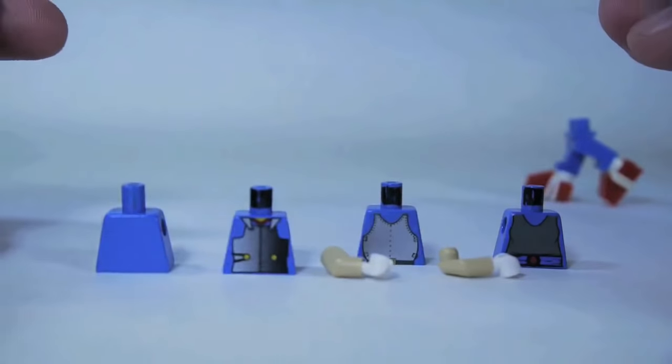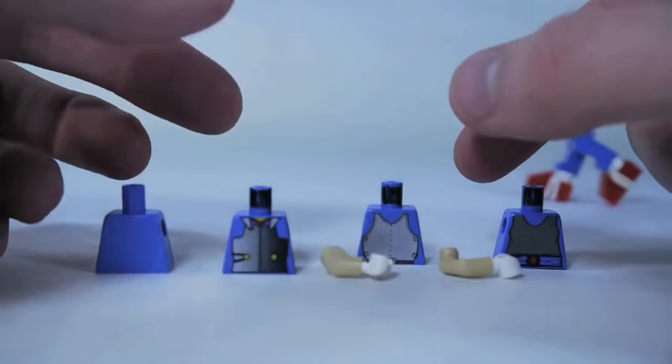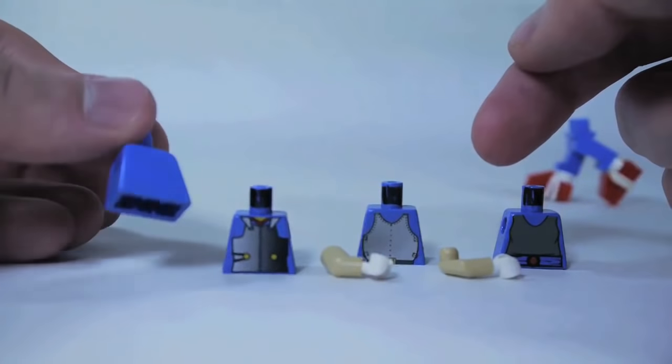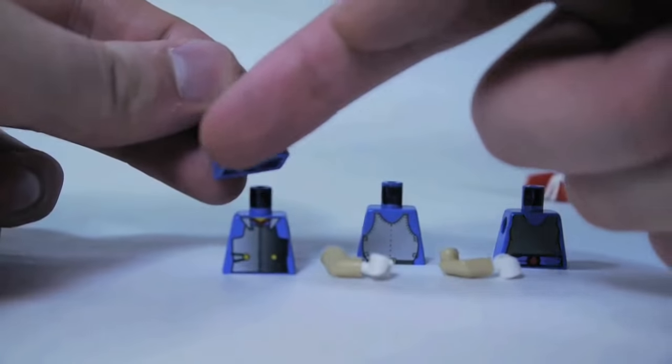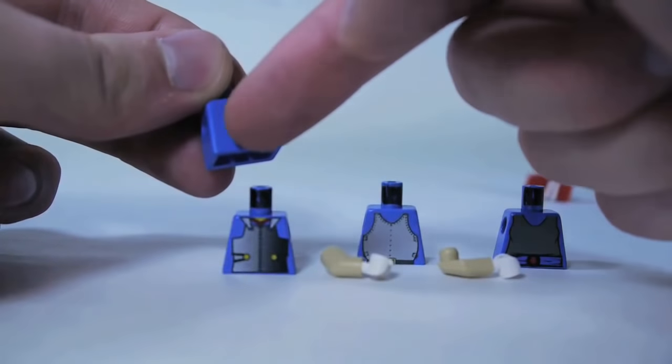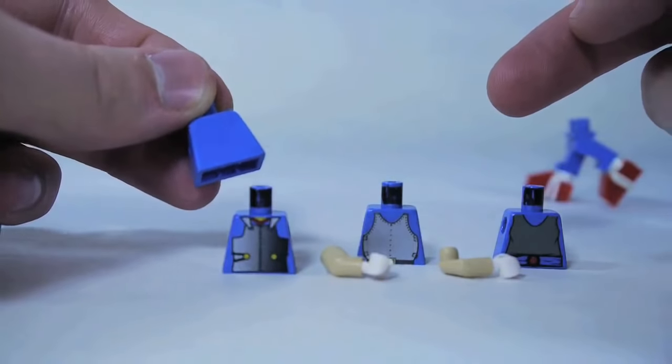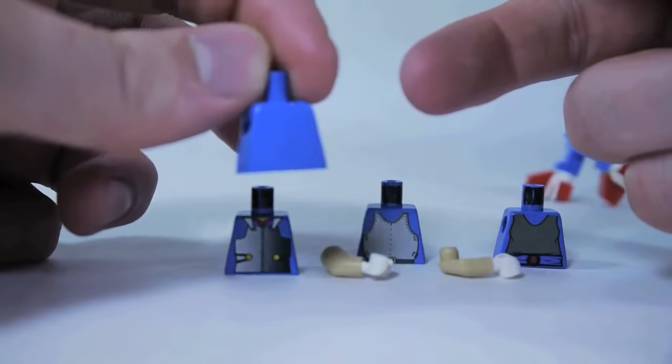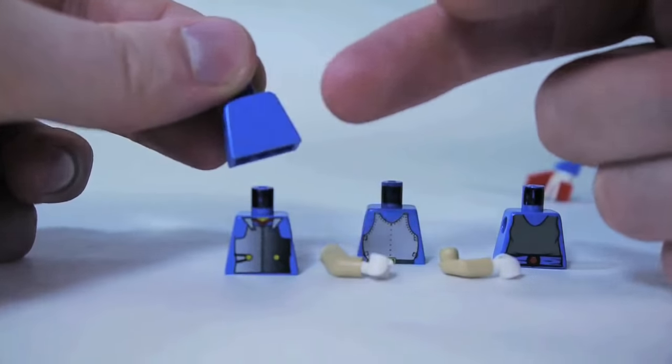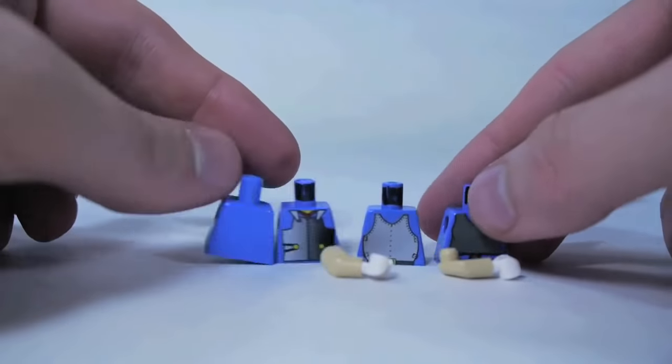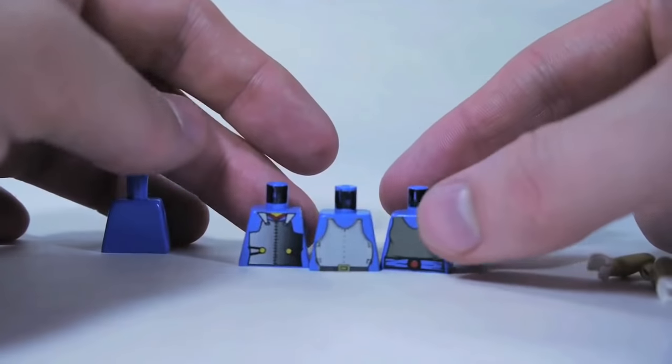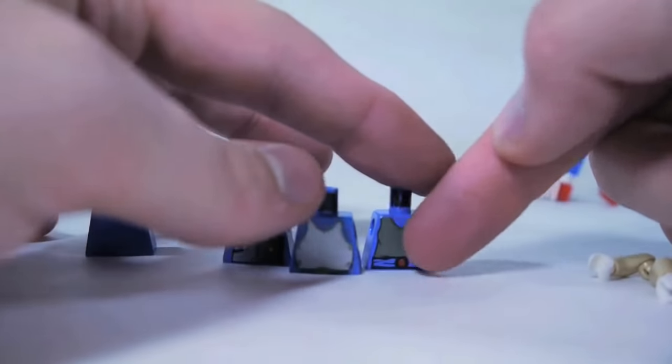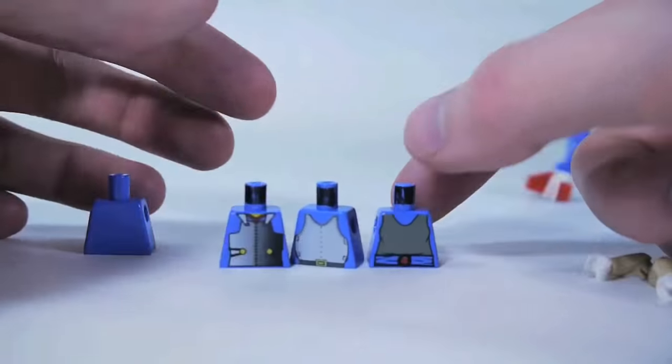So for the torso, there's not really a torso that gives a perfect Sonic look. Ideally his body would be blue with a circle of tan in the middle, more of an oval really. But there's a couple ways you could do that. You could either get a plain blue torso and paint a tan oval in the middle.